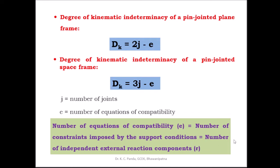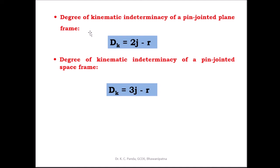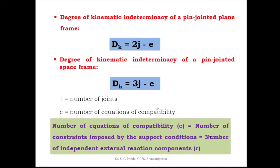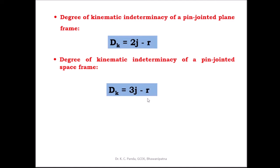Since c equals r (the number of independent external reaction components), the equation reduces to: the degree of kinematic indeterminacy of a pin-jointed plane frame is dk = 2j − r. Similarly, for a pin-jointed space frame, dk = 3j − r, where r is the number of independent external reaction components.